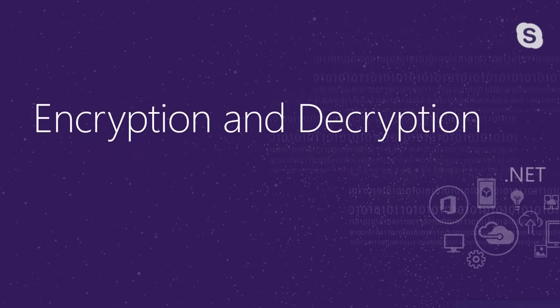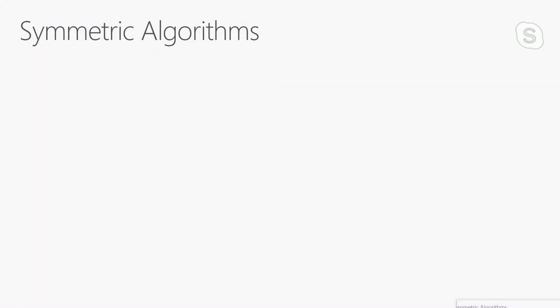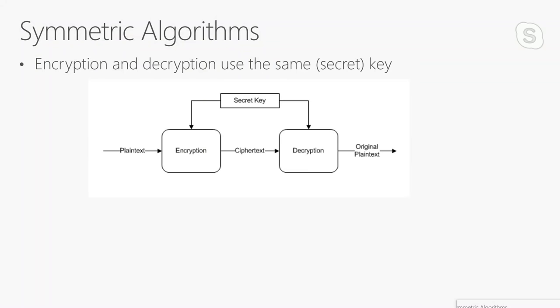Now we'll get into what most people expect for cryptography — encryption and decryption. There are going to be two different kinds. We'll talk about symmetric algorithms first. They're symmetric because the encryption and the decryption are going to use the same secret key. We're going to have a secret to share between two partners that want to exchange data, and we need to keep that key secret. On the left-hand side I've got the plain text, I run my encryption algorithm with a secret key, the result is the ciphertext. The receiver uses the exact same secret key to decrypt and get back the original plain text.